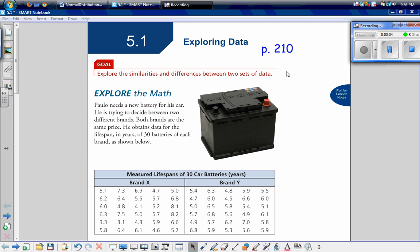Chapter 5 is all about statistical reasoning. So 5.1 is about exploring data. Our goal is to explore the similarities and differences between two sets of data. Let's do the explore the math together.